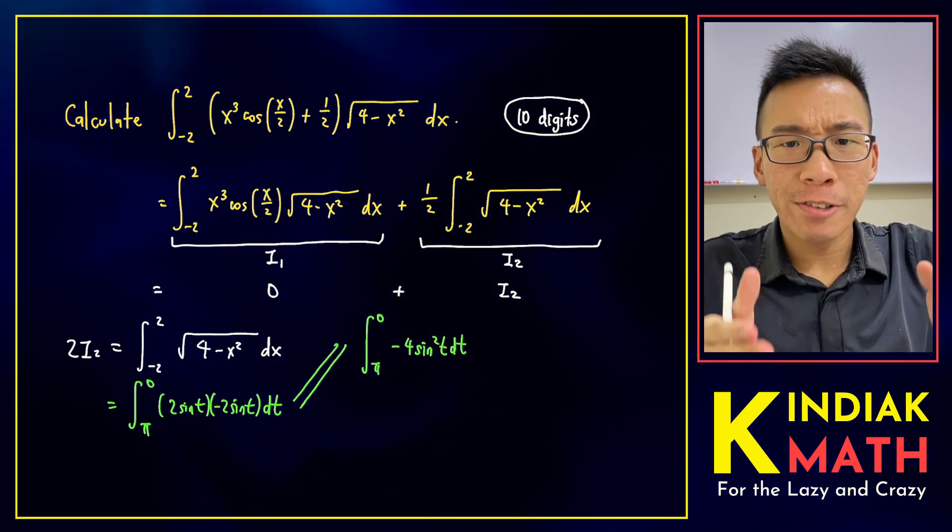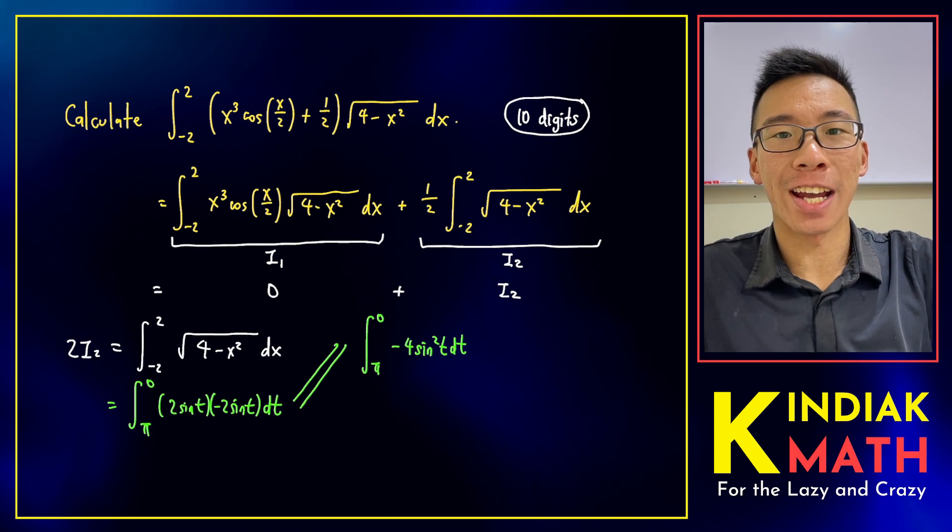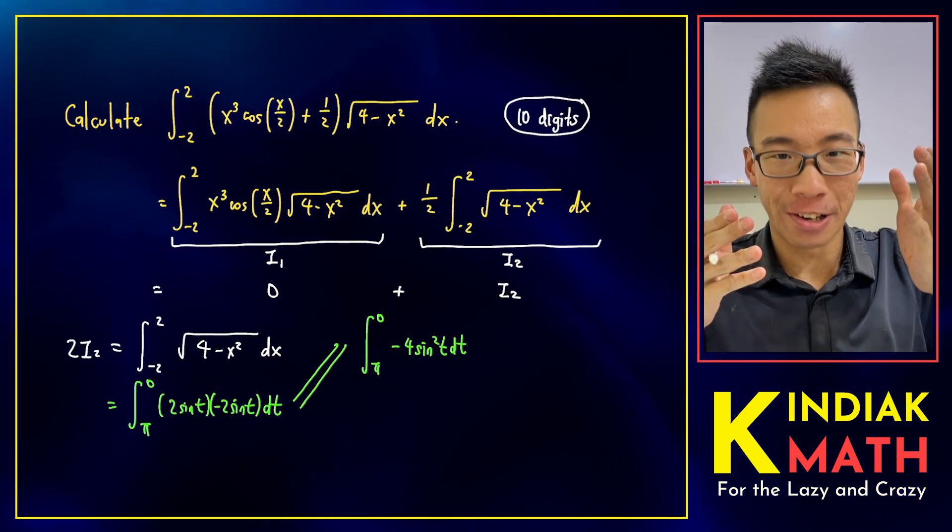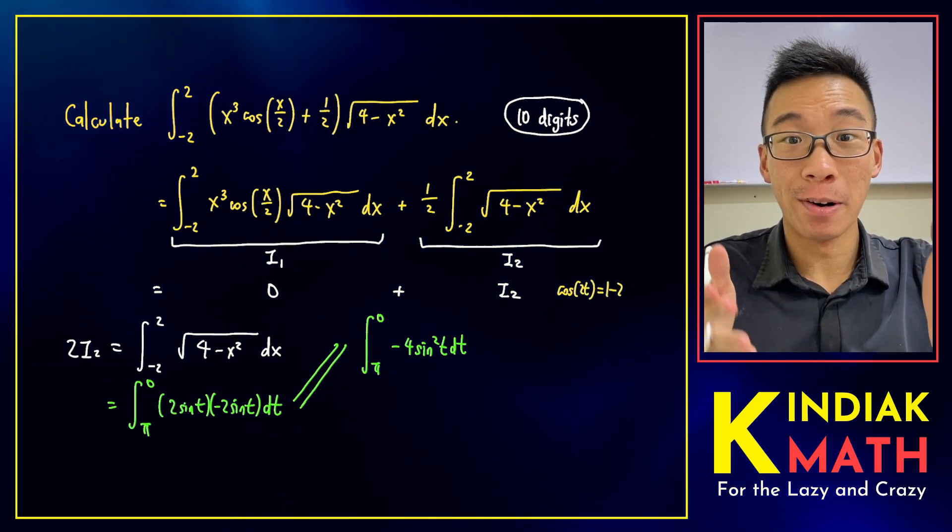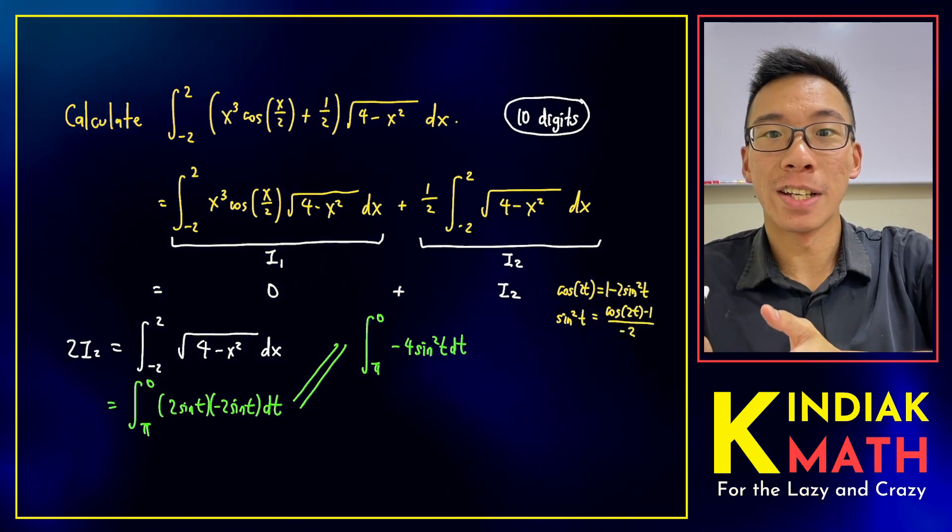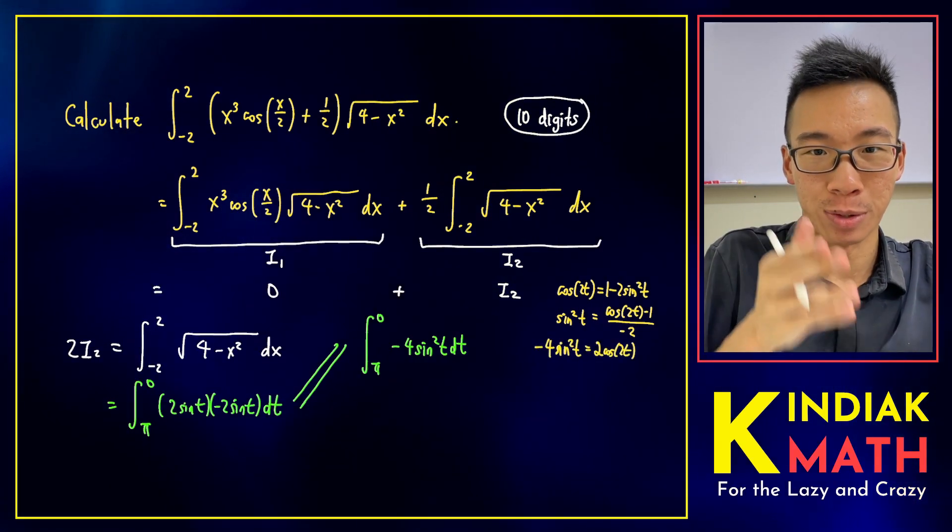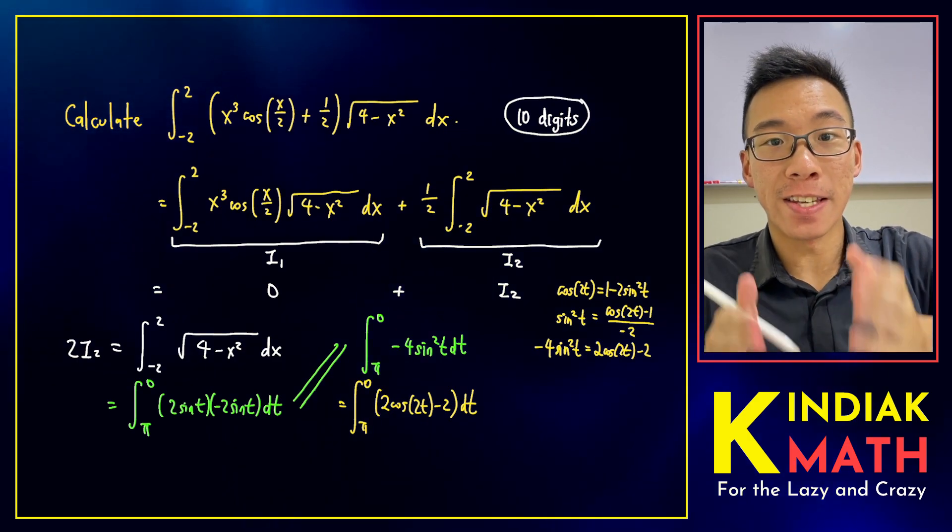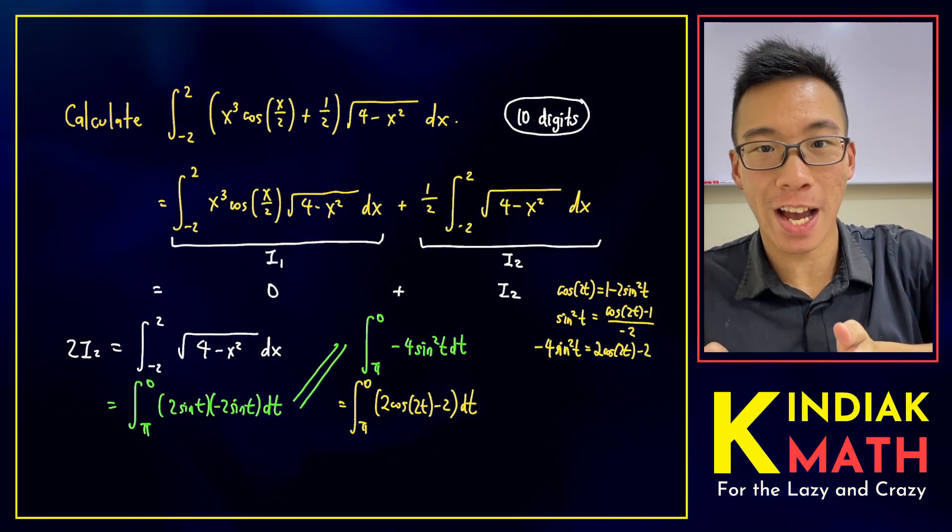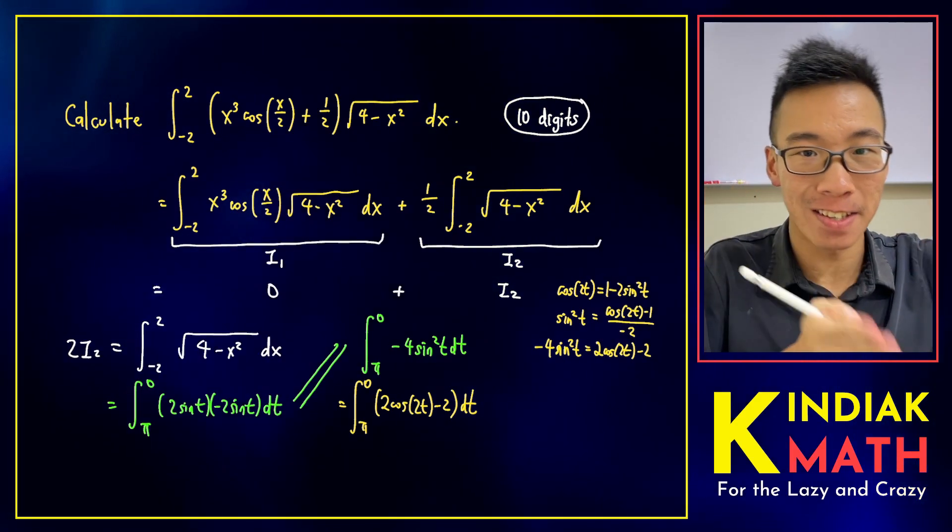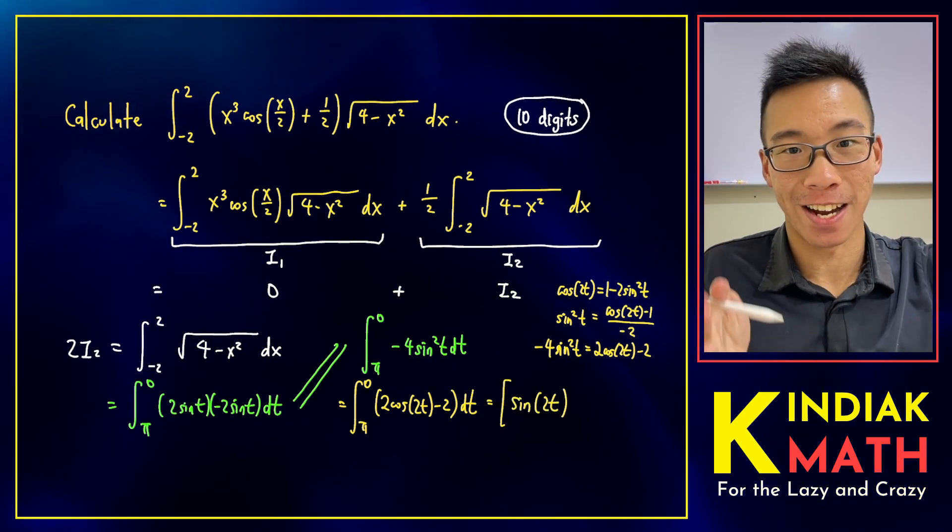To integrate the square root of a sine, we resort to a very neat trick in integration, which is the double-angle formula that helps us write sine squared of t in terms of cosine of 2t. We can plug this expression into the integral. Since the antiderivative of cosine is sine, and the antiderivative of 1 is t, we get the following antiderivative.